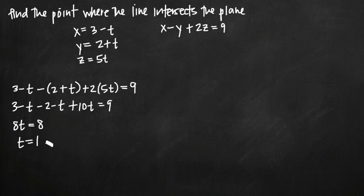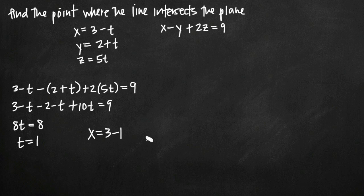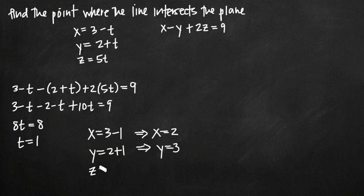t equals 1 is the value of the parameter where the intersection occurs between the line and the plane. Now, in order to find the coordinate point in terms of x, y, and z, all we need to do is plug this parameter value into the parametric equations. Plugging in t equals 1: x equals 3 minus 1, so x equals 2; y equals 2 plus 1, so y equals 3; and z equals 5 times 1, so z equals 5.